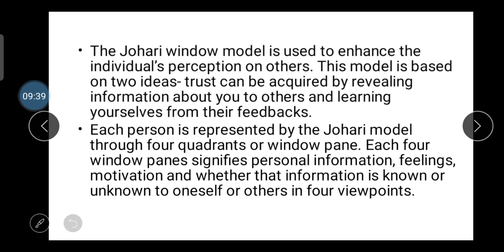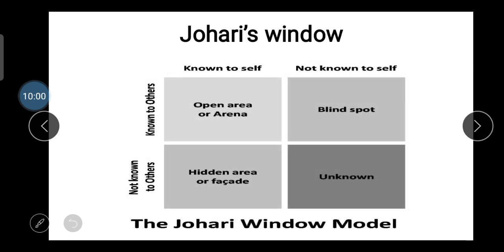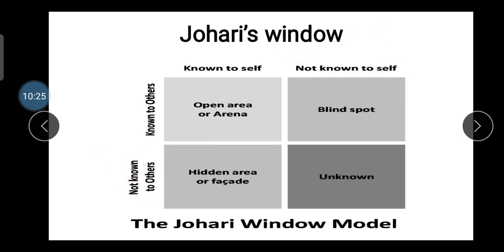The Johari Window model is used to enhance an individual's perception of others. It is based on two ideas: trust acquired by sharing information about yourself to others, and learning about yourself from their feedback. Each person is represented by the model through four quadrants. The diagram shows: open area, blind spot, hidden area, and unknown.